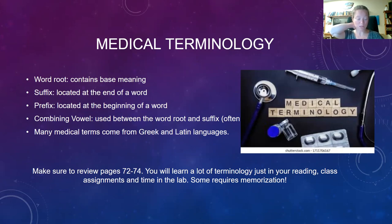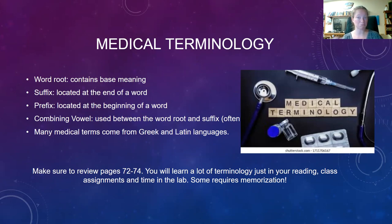Let's look at some examples. Cardiologist — cardi means heart, the O is the combining vowel easing pronunciation, and logist means specialist in the knowledge of. So cardiologist means specialist in the knowledge of the heart. Tachycardia is a condition of rapid heartbeat — tachy meaning rapid, cardi meaning heart, and the suffix -ia meaning a condition of. So tachycardia: condition of rapid heartbeat.